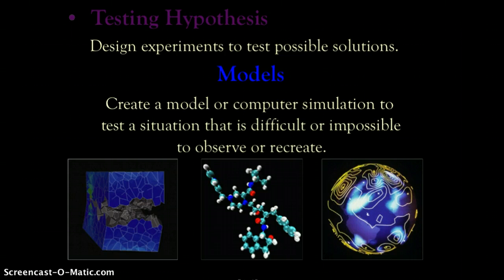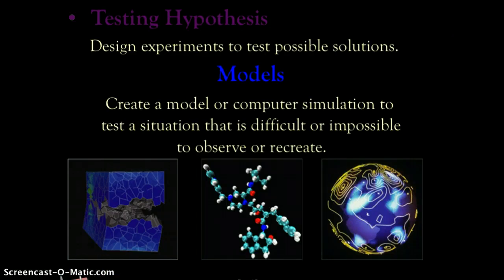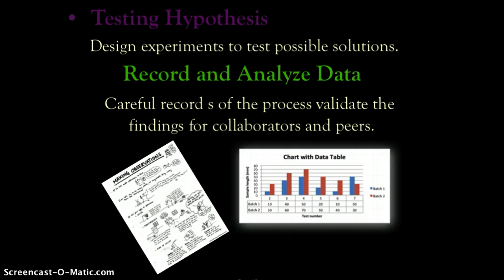Sometimes it's impossible or impractical to set up a direct experiment, so we use models. Some models take something very small and create a large-scale version to test probabilities. Other times, we go to a computer and create simulations to see how things will react. Models let us test things in a safer, more feasible way.